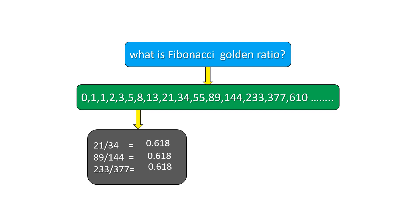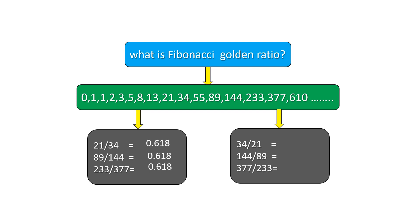Now let's inverse those ratios. Instead of 21 over 34, you get 34 over 21; 144 over 89; 377 over 233. The ratio is now 1.618 every time. I remember when I was a university student, long ago, I was amazed by the Fibonacci ratio. 1.618 is another golden ratio, and we are going to find out the rest of the golden ratios.